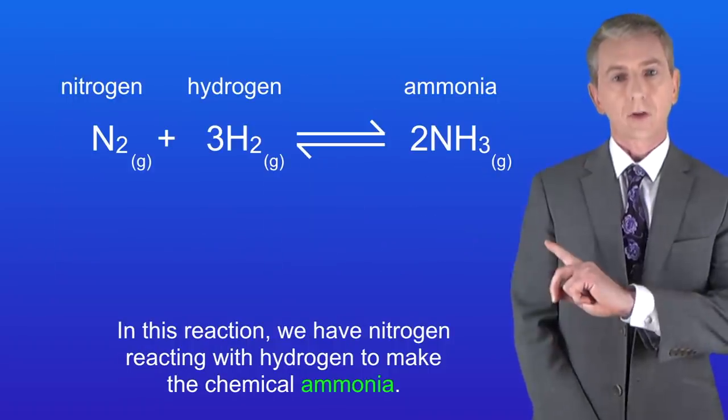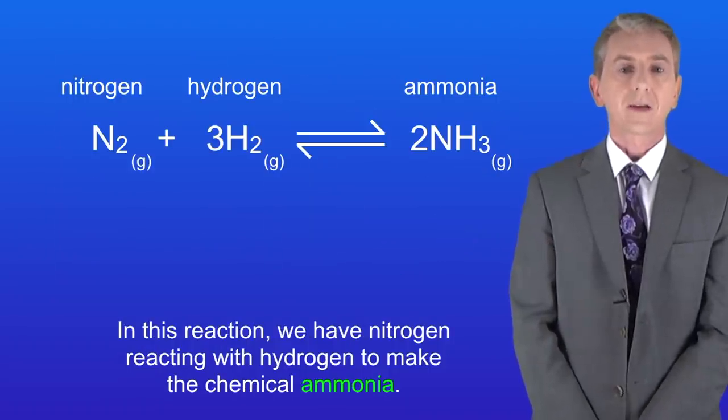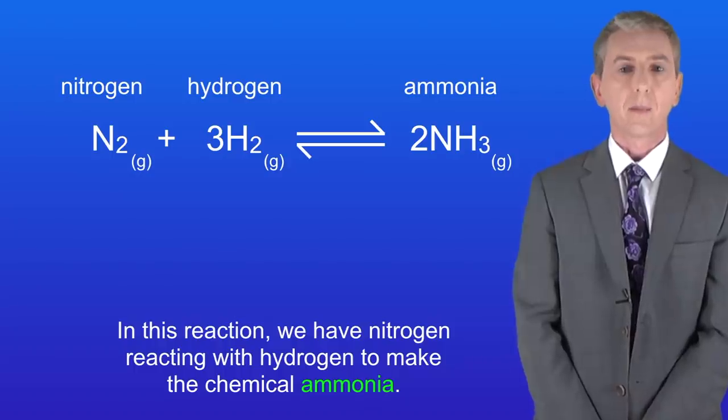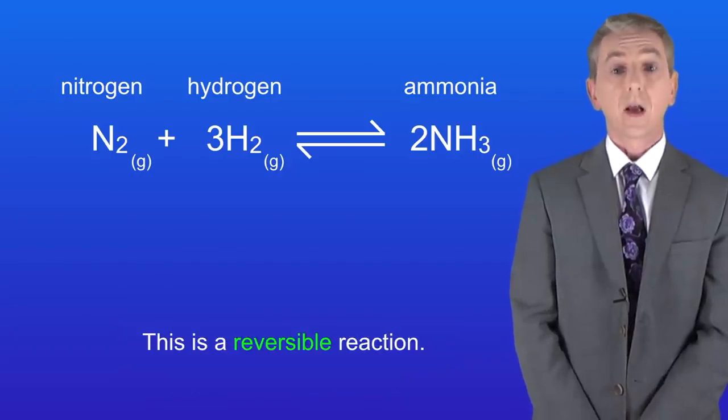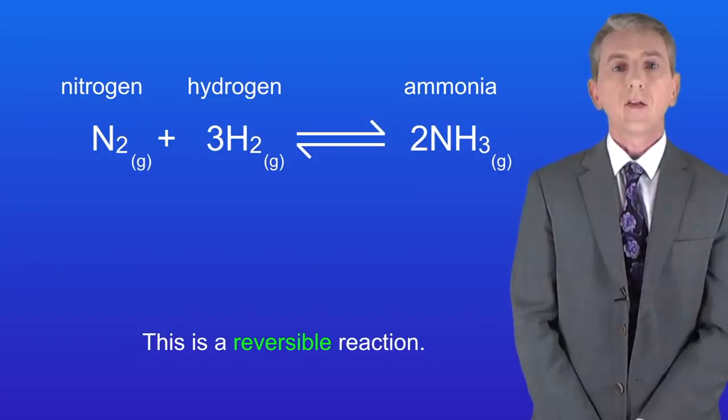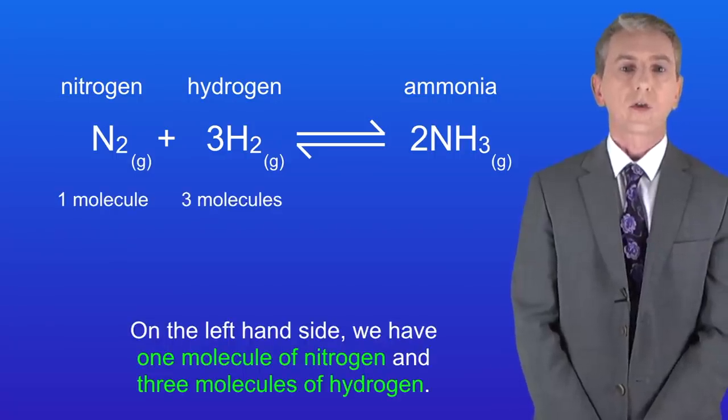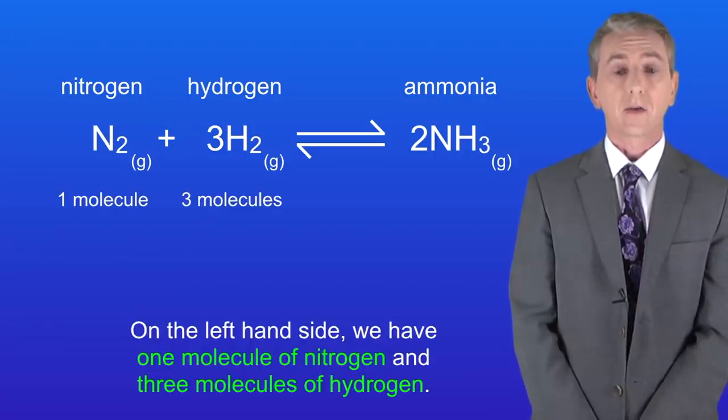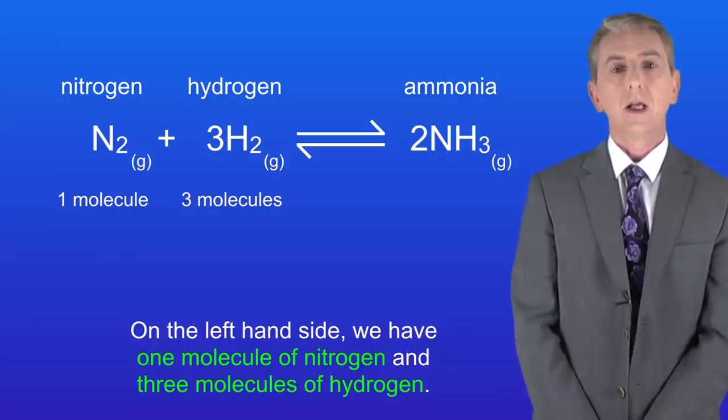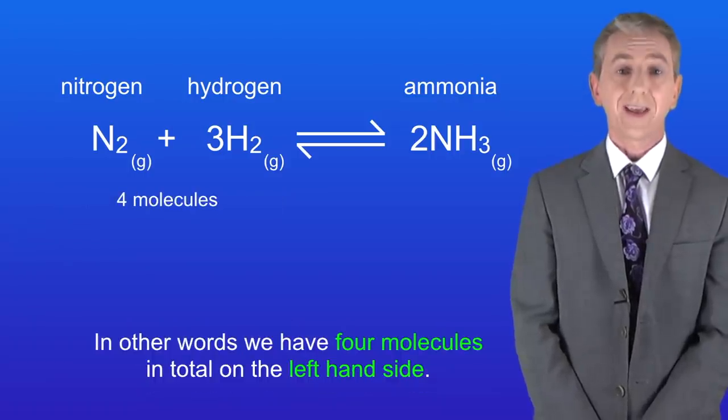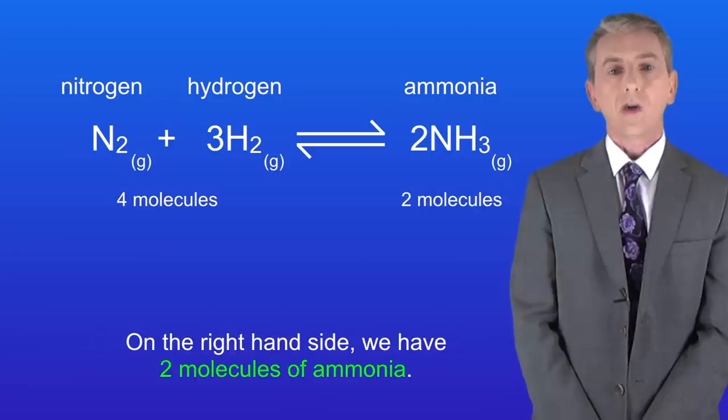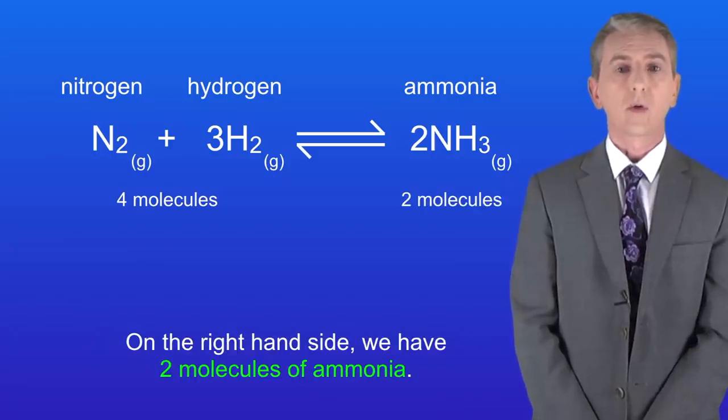Take a look at this reaction. We've got nitrogen reacting with hydrogen to make the chemical ammonia, and as you can see this is a reversible reaction. If we look at the large numbers we can see the number of molecules in this reaction. On the left hand side we've got one molecule of nitrogen and three molecules of hydrogen. In other words we've got four molecules in total on the left hand side. On the right hand side we've got two molecules of ammonia.